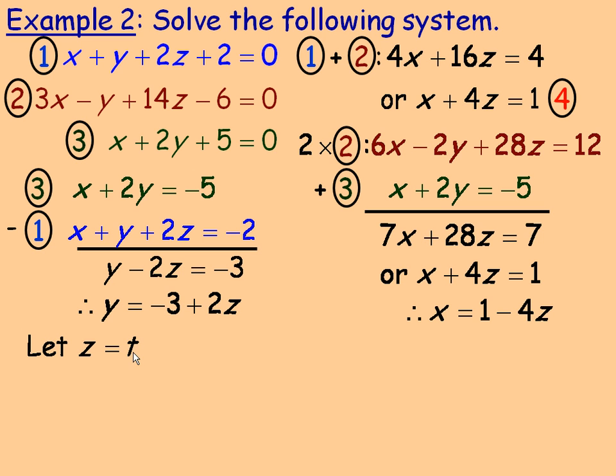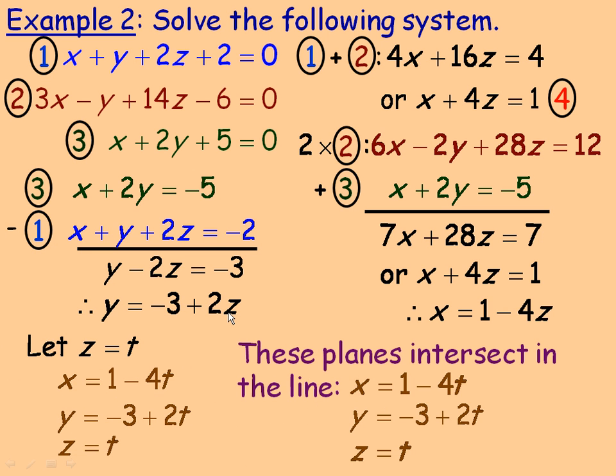So letting z equal t, x would be 1 minus 4t. y would be negative 3 plus 2t because we're replacing z with t. And of course z would be t. So that's the parametric equations of the line of intersection of these three planes. It's not a unique solution in this case, it's a line of intersection.